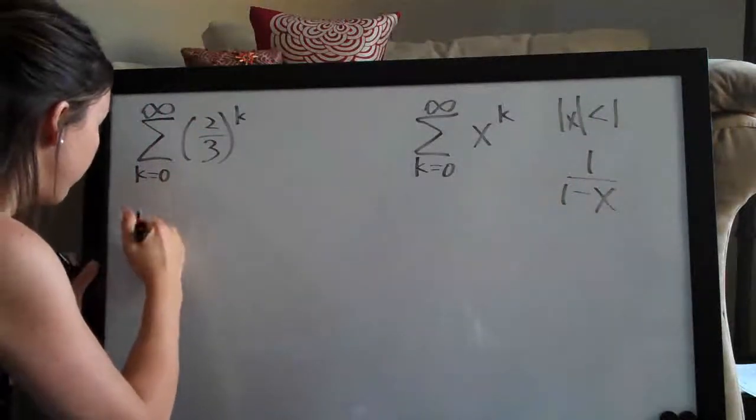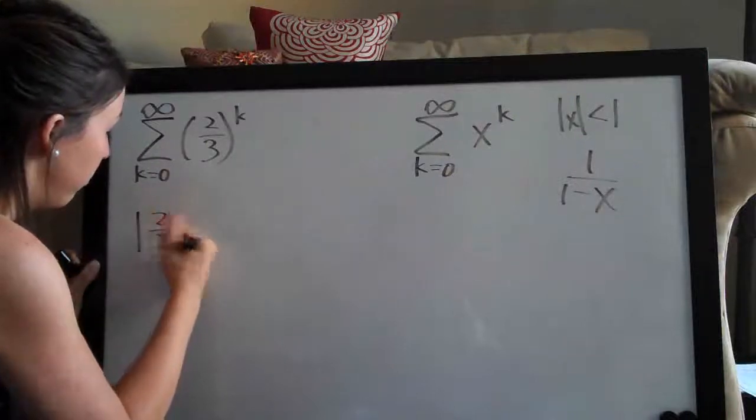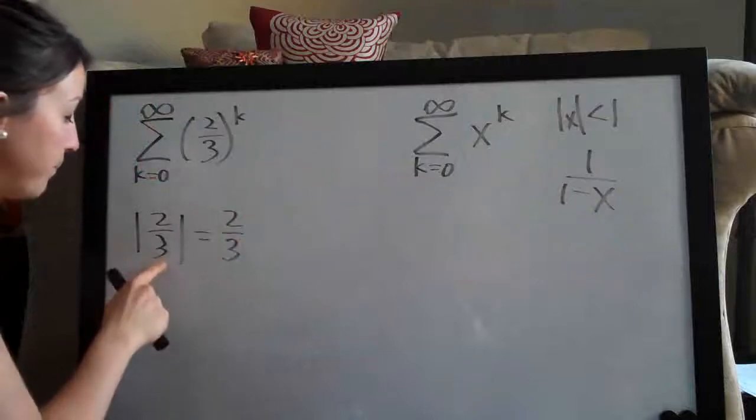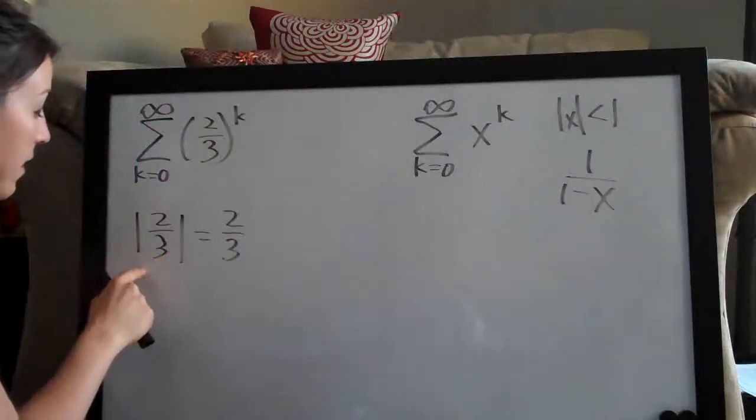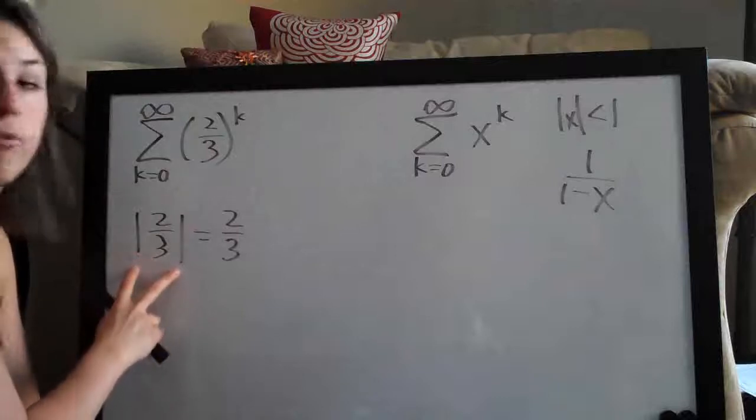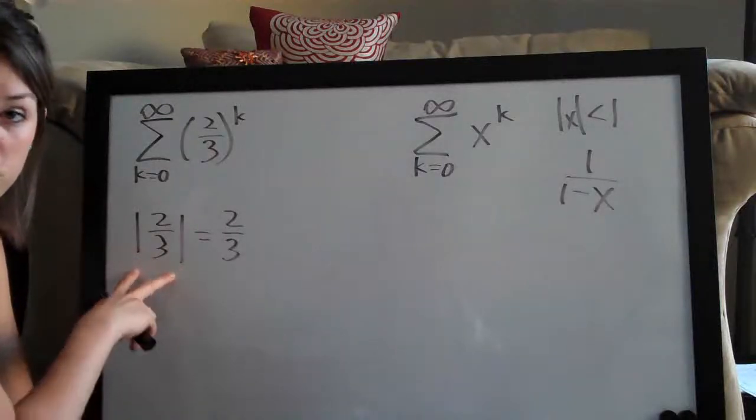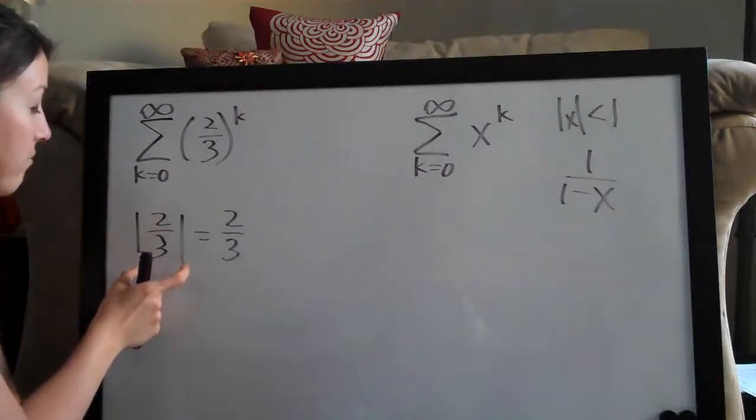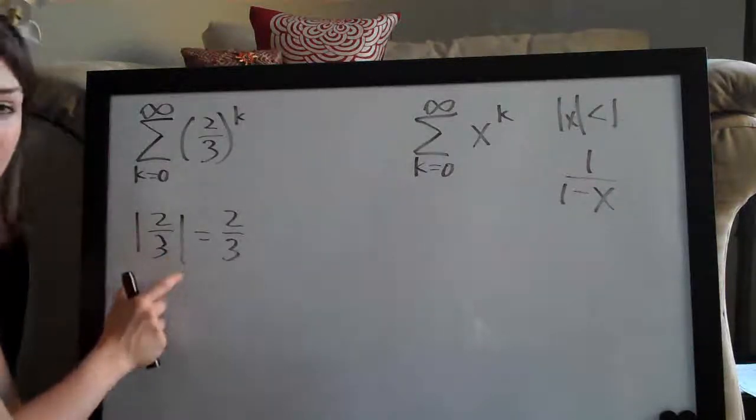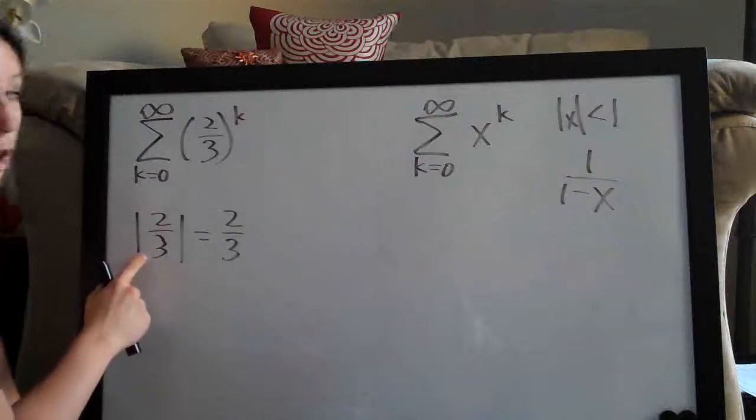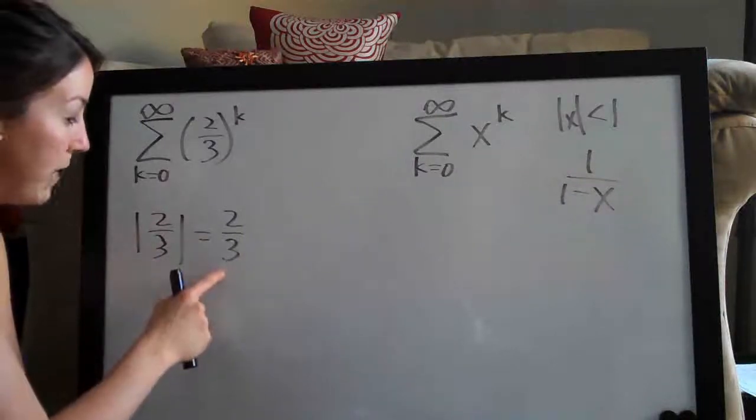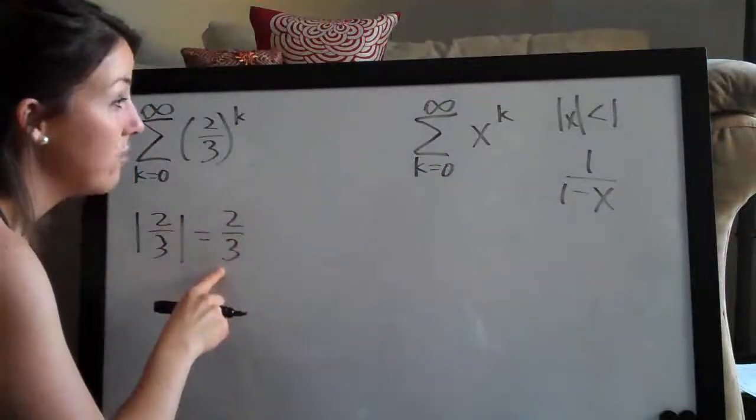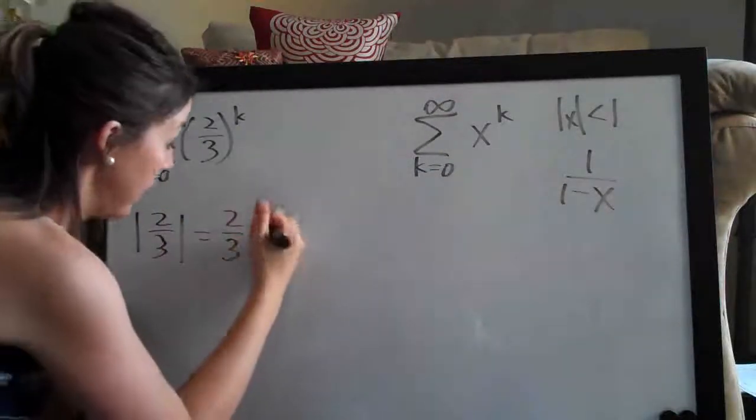...so the absolute value of two-thirds is just two-thirds. And if you're not familiar with absolute value, all that it means here is if this were a negative two-thirds, the absolute value would just be positive two-thirds. It's always the positive value of what's inside the absolute value brackets. So in this case, it's already positive, so it just remains two-thirds.